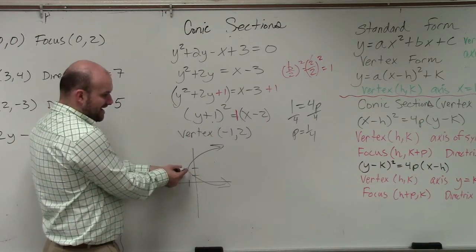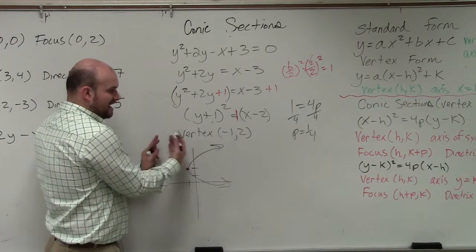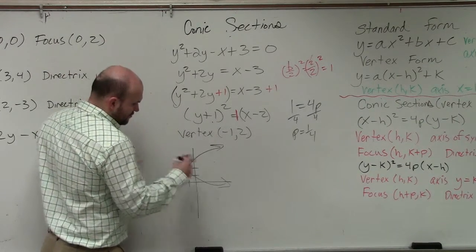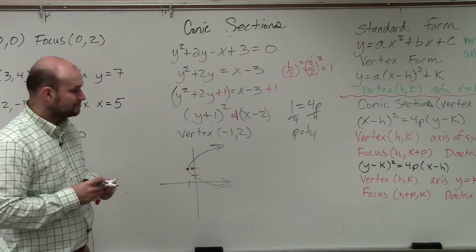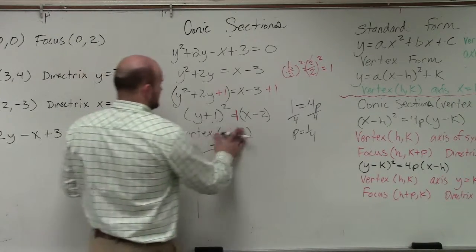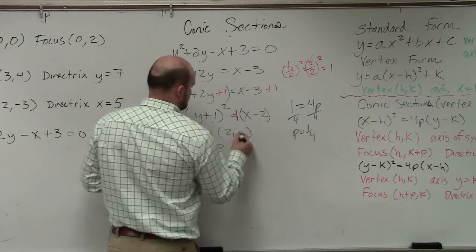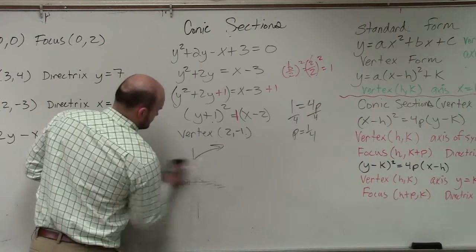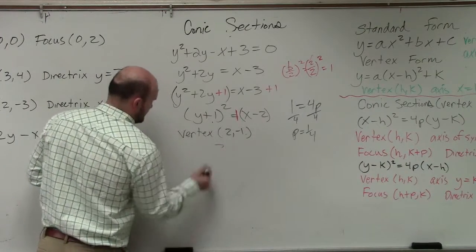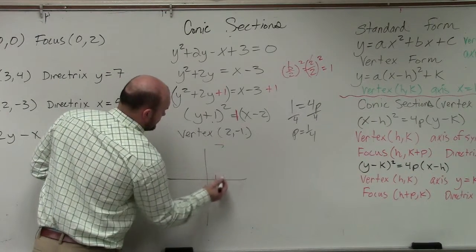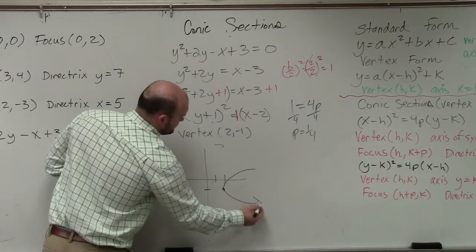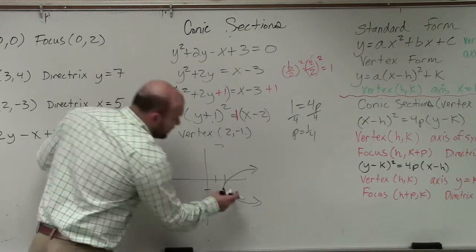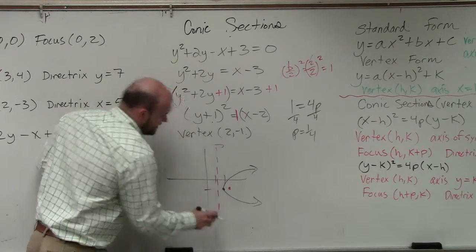So you have p equals 1 fourth. Now, if you guys here have the graph, to find the focus, I am going to, the focus is like right here, right? Would it be 2 million of 1? Yes, it would be, actually. Thank you. Good call. So anyways though, the focus is right here, right? And the directrix is going to be right here.